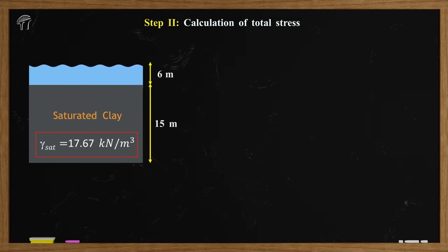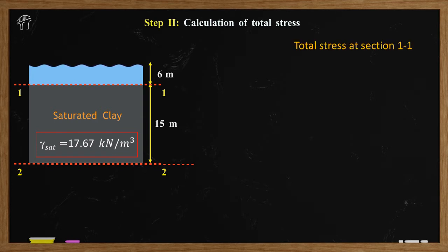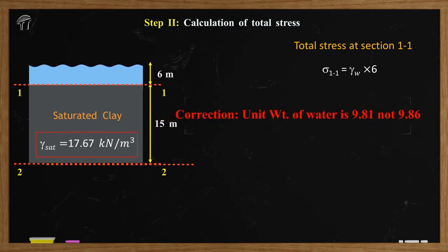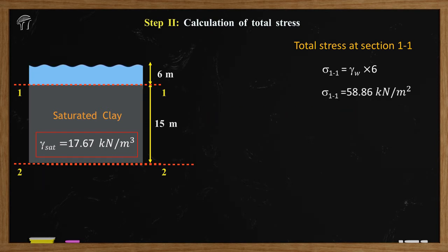For better understanding of this numerical, we will divide the soil profile into two different sections: Section 1-1 at the bottom of the lake, and Section 2-2 which is 15 meters below the bottom of the lake where we have to calculate the final value of effective stress. At Section 1-1, all the water present above it inside the lake will act as overburden pressure. Therefore, total stress at Section 1-1 will be equals to the unit weight of water, 9.81, multiplied by the height of water inside the lake, 6, giving 58.86 kN/m².